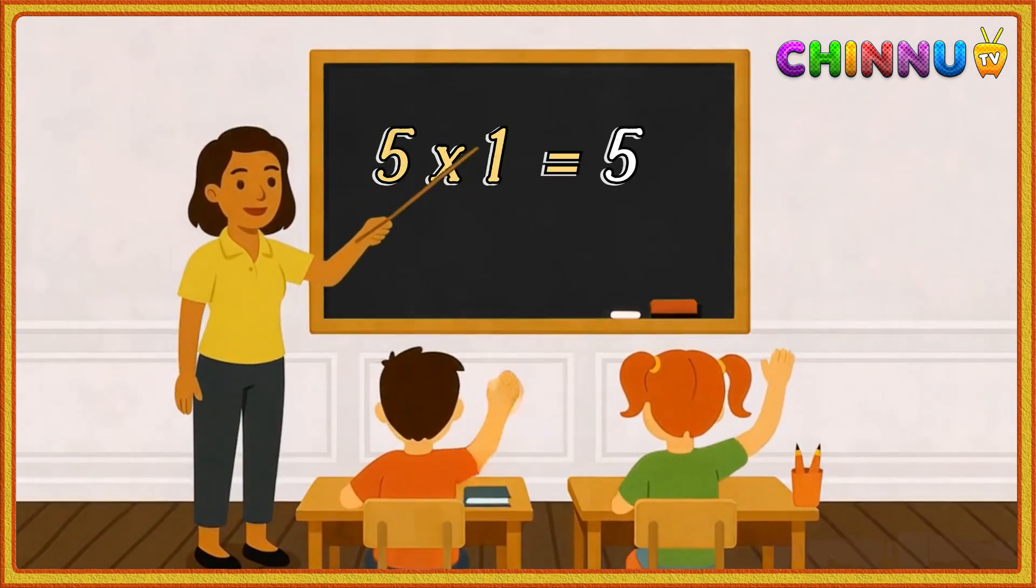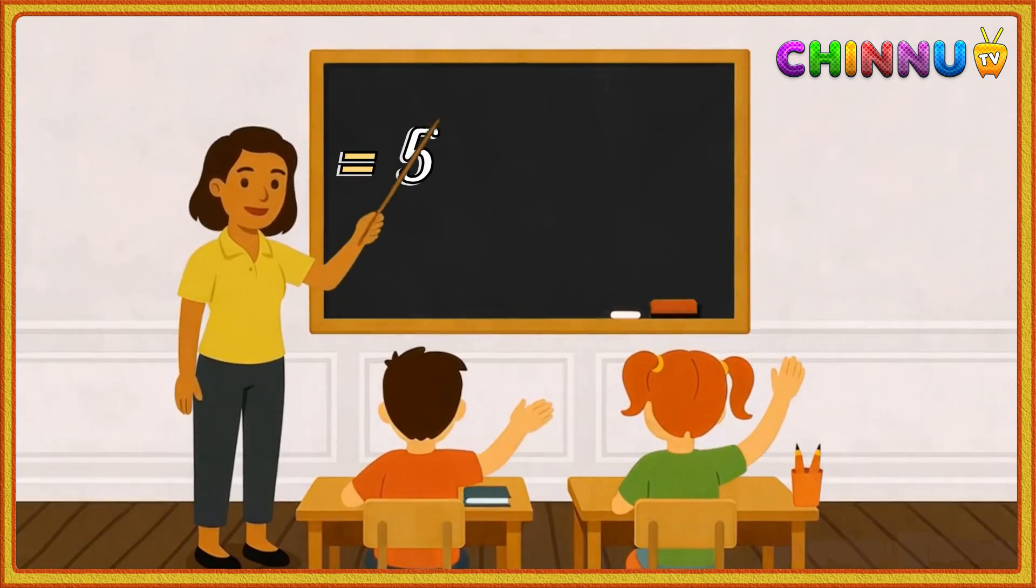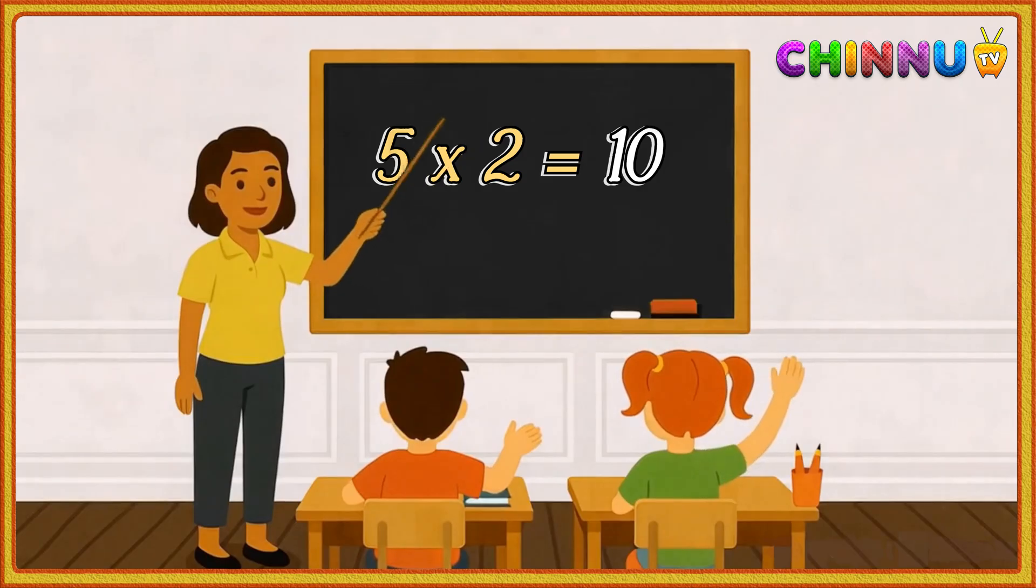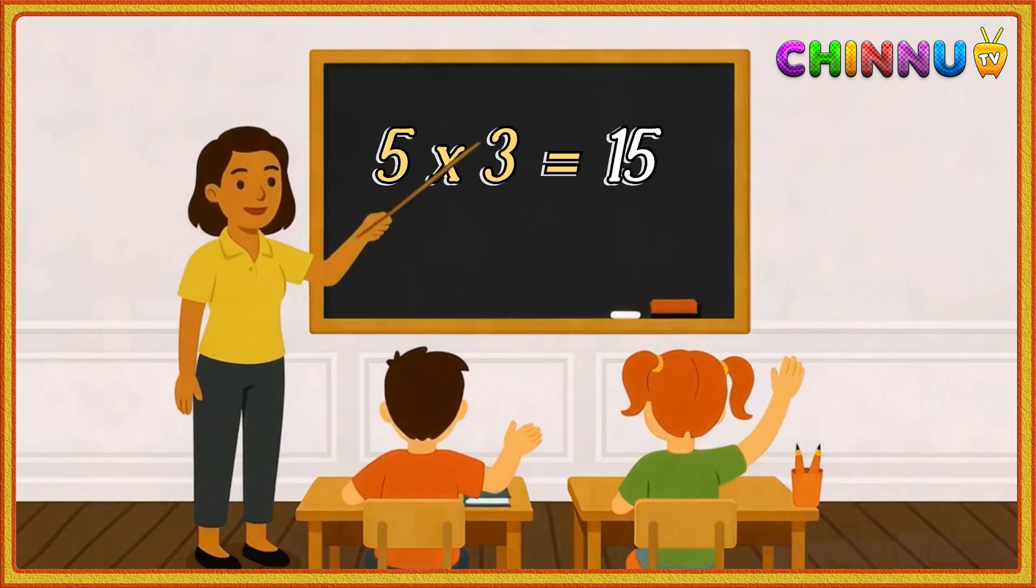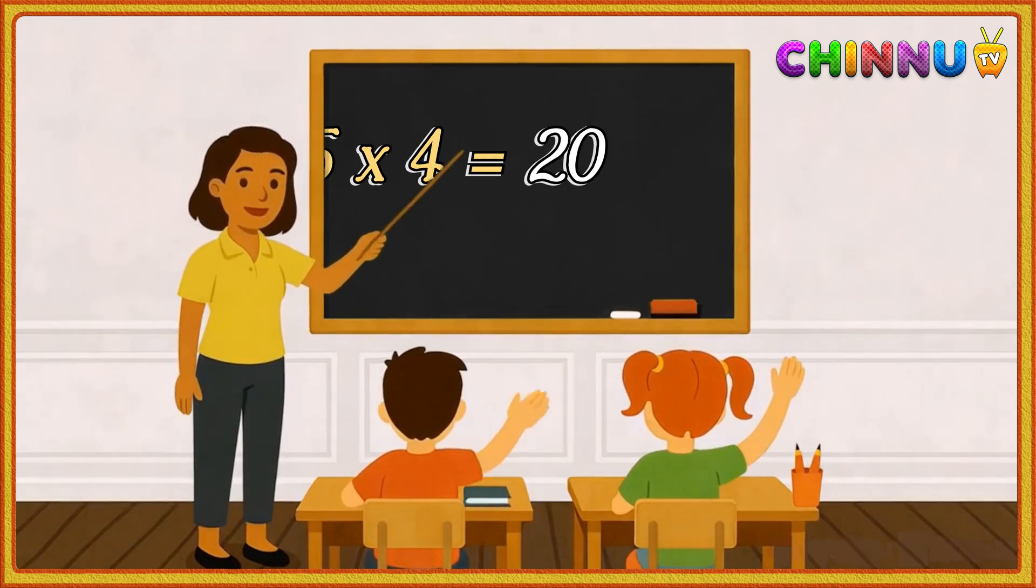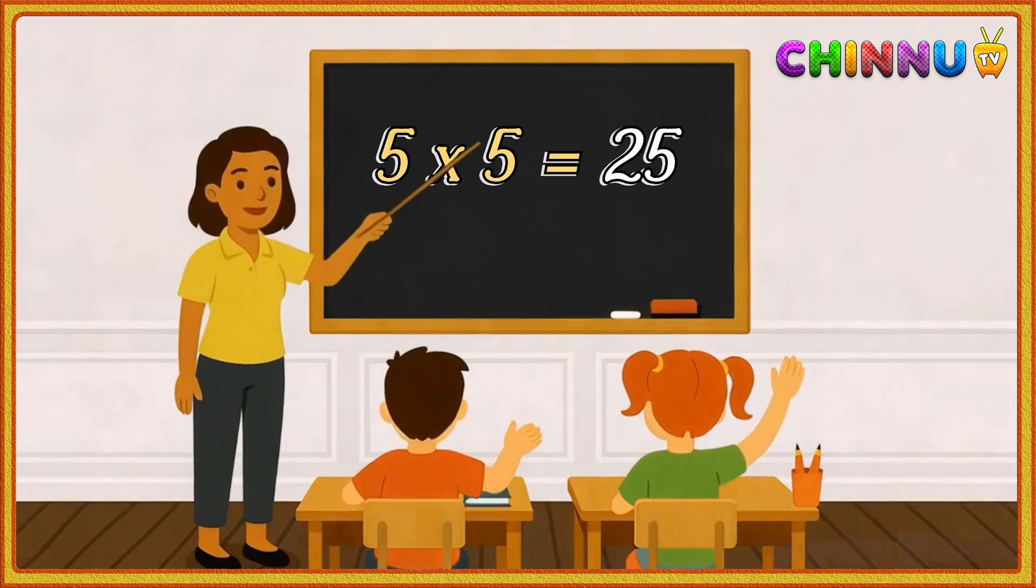Five ones are five, five twos are ten, five threes are fifteen, five fours are twenty, five fives are twenty-five.